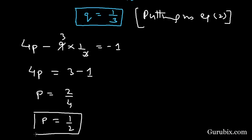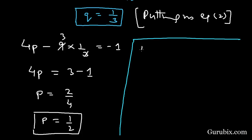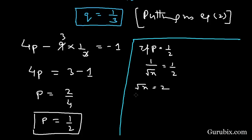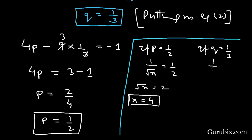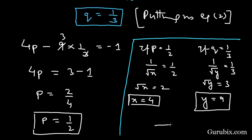Now we can find the values of x and y. Since P = 1/2, we have 1/√x = 1/2, so √x = 2, meaning x = 4. Similarly, since Q = 1/3, we have 1/√y = 1/3, so √y = 3, meaning y = 9. So this is the solution of the question. Thank you.